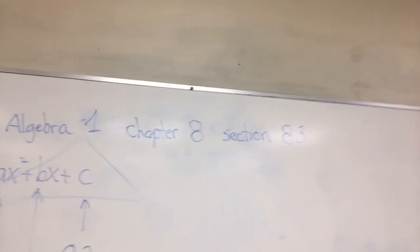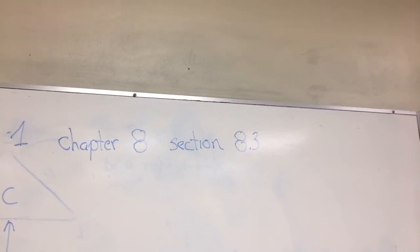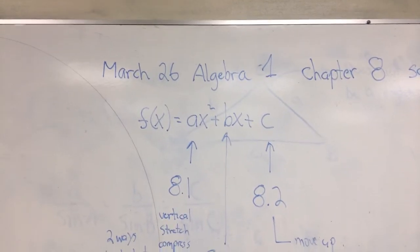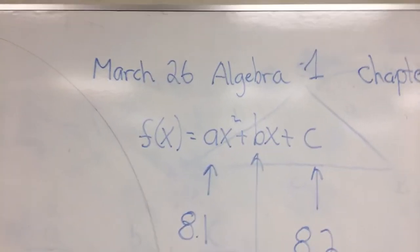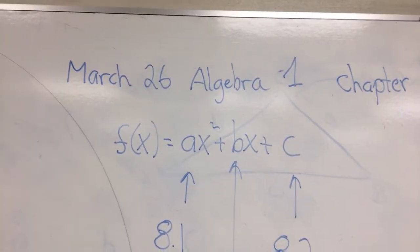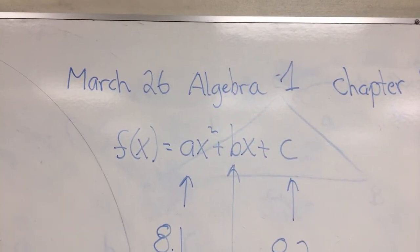March 26th, of course, Algebra 1, chapter 8, section 8.3. And you can tell that my markers are starting to die. All right, so here's the entire quadratic: F(x) = ax² + bx + c.